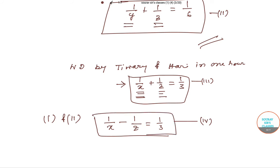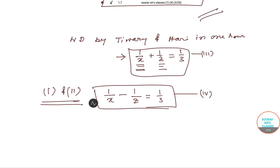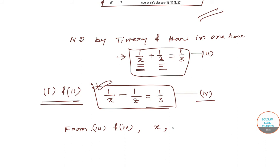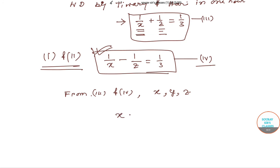This was straightforward. From Equations 3 and 4, we can solve for X, Y, and Z. We get: X = 3 hours, Y = 6 hours, and Z = 0.